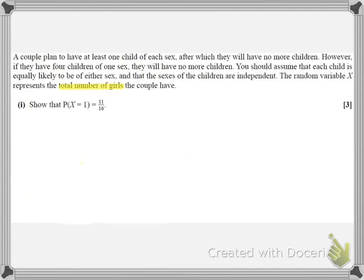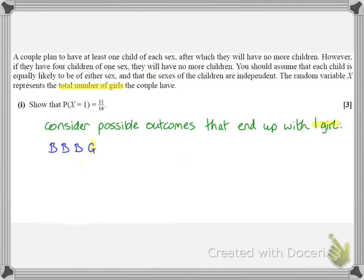So we're looking for the probability that X equals 1. So that means the total number of girls is going to be 1. So we need to consider all the possible outcomes that end up with 1 girl. Now we can do this quite systematically either by looking at the scenario of having 4 children altogether including 1 girl and work back down until we have just 1 of each or work in the opposite order. I happen to have chosen to start with this situation where they had a boy, then a boy, then a boy and then a girl. So that's a scenario with 1 girl.